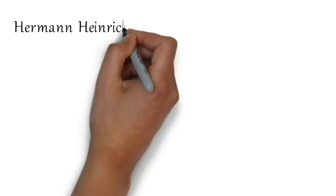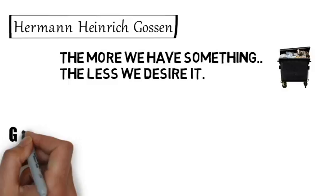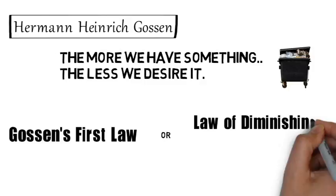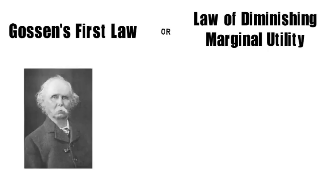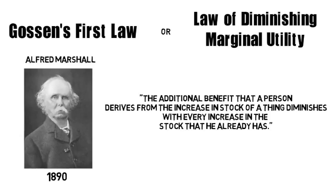This kind of behavior was first analyzed by a Prussian economist called Hermann Henrich Gossain. Gossain stated that the more we have something of, the less we desire of it. This thing came to be known as Gossain's first law or the way we know it now as the law of diminishing marginal utility. The law of diminishing marginal utility was further analyzed by an English economist called Alfred Marshall in his book Principles of Economics in 1890. Marshall stated that the additional benefit that a person derives from the increase in stock of a thing diminishes with every increase in the stock that he already has.